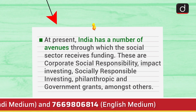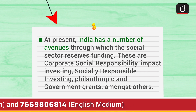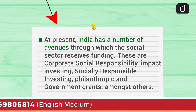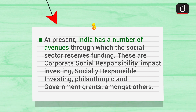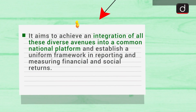At present, India has a number of avenues through which the social sector receives funding. These are corporate social responsibility, impact investing, socially responsible investing, philanthropic and government grants, amongst others. The SSE simply aims to achieve an integration of all these diverse avenues into a common national platform and establish a uniform framework in reporting and measuring financial and social returns.